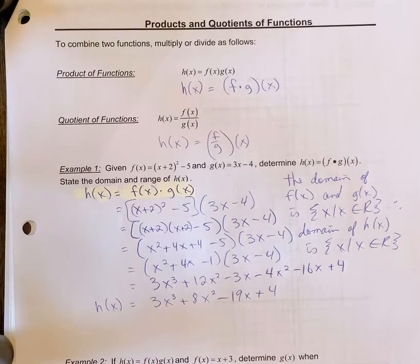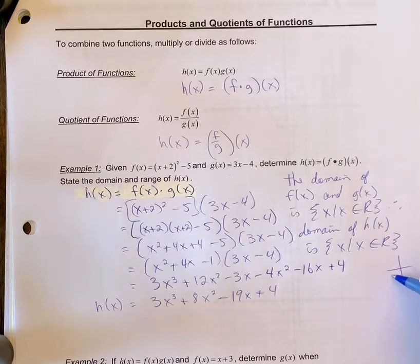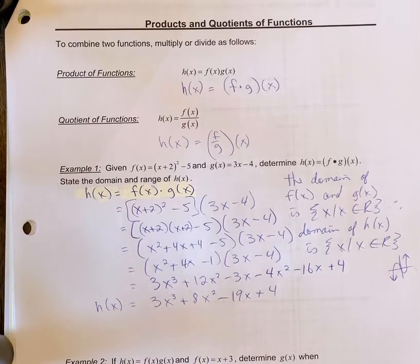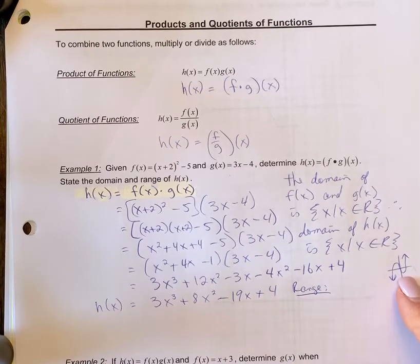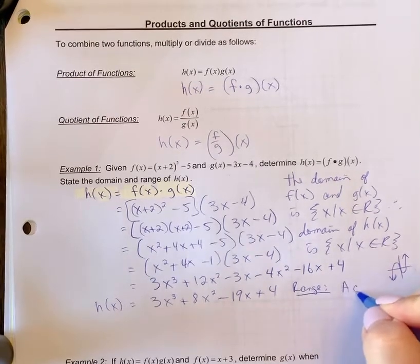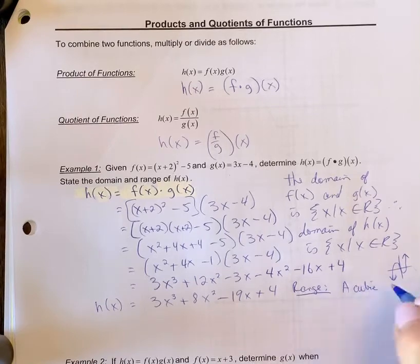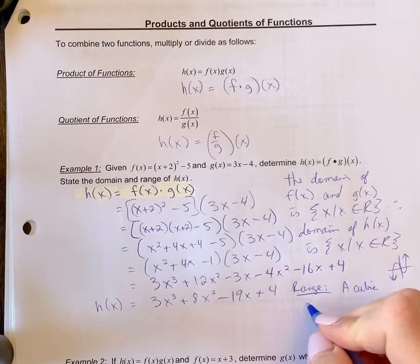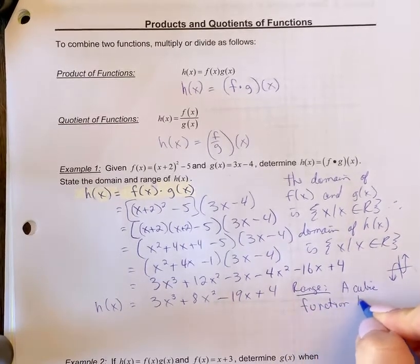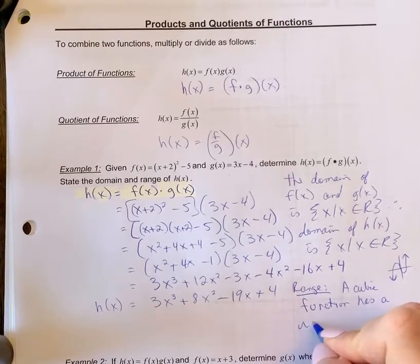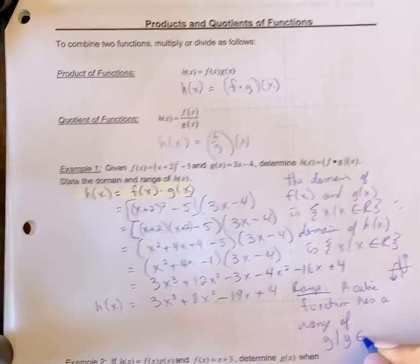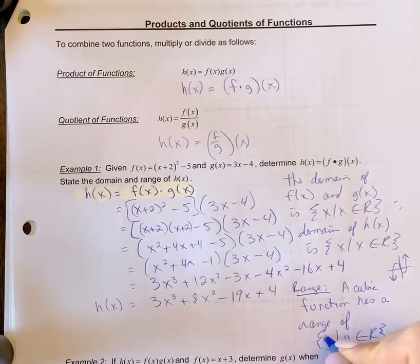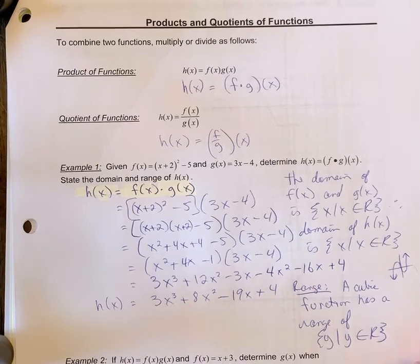You can also picture that this would be a cubic function. So it would have this sort of general shape, and that would be x ∈ reals as well. And for the range, you would actually need to visualize that shape. A cubic function has no restrictions either. So cubic function has a range of y ∈ reals. So you have your y ∈ reals as your range as well.